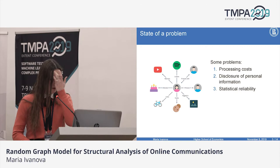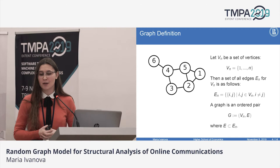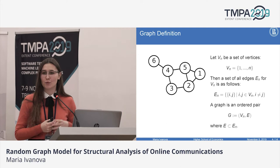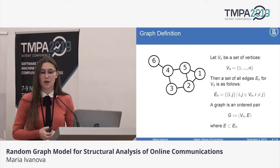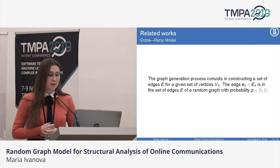Let me formalize the key concept we are talking about today. Let V sub N be a set of graph vertices. Then, a set of graph edges is a connected pair of vertices. And the graph itself is an ordered pair of vertices and edges. Now we can move to the discussion of the most popular and easy-to-understand random graph models.